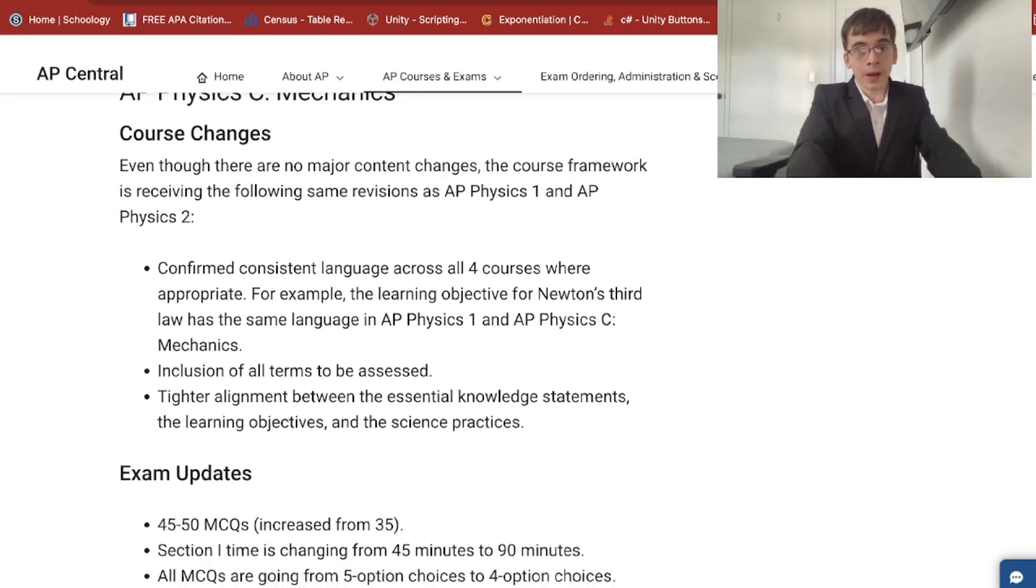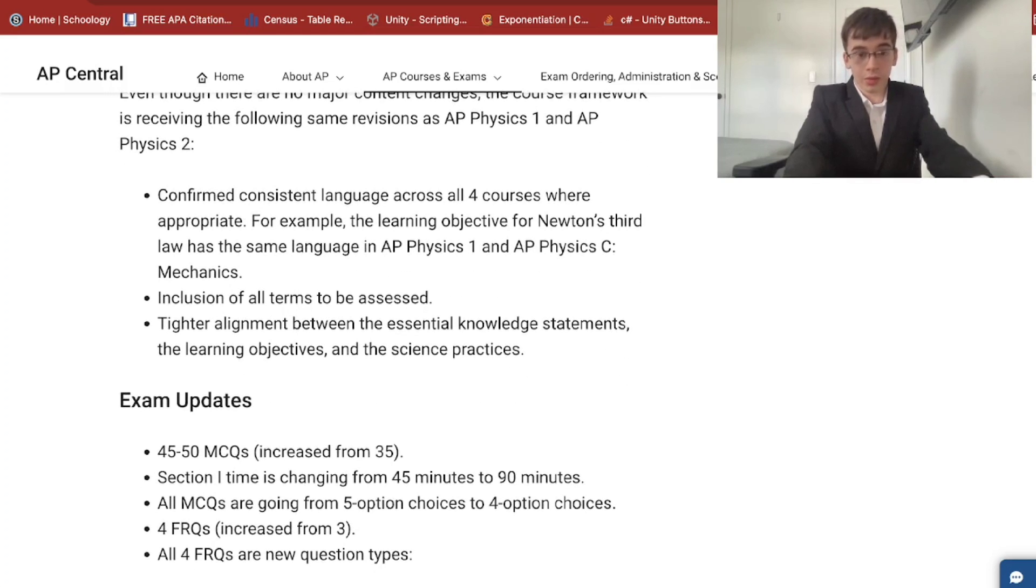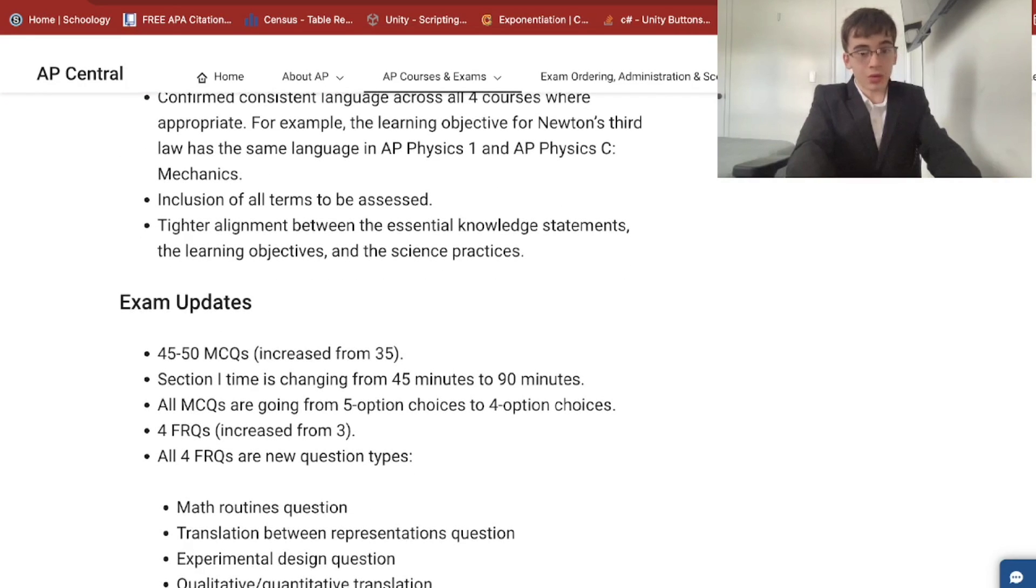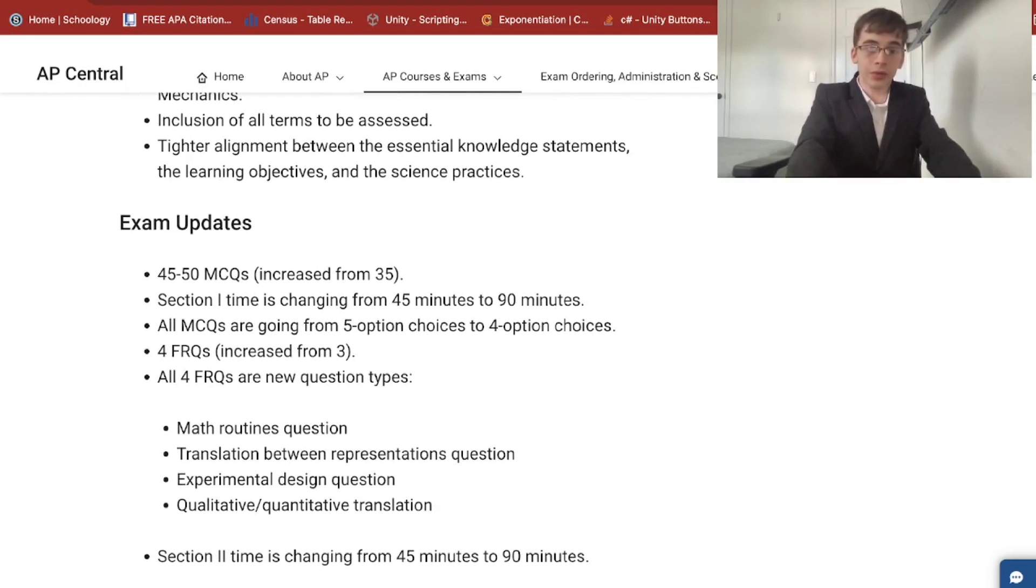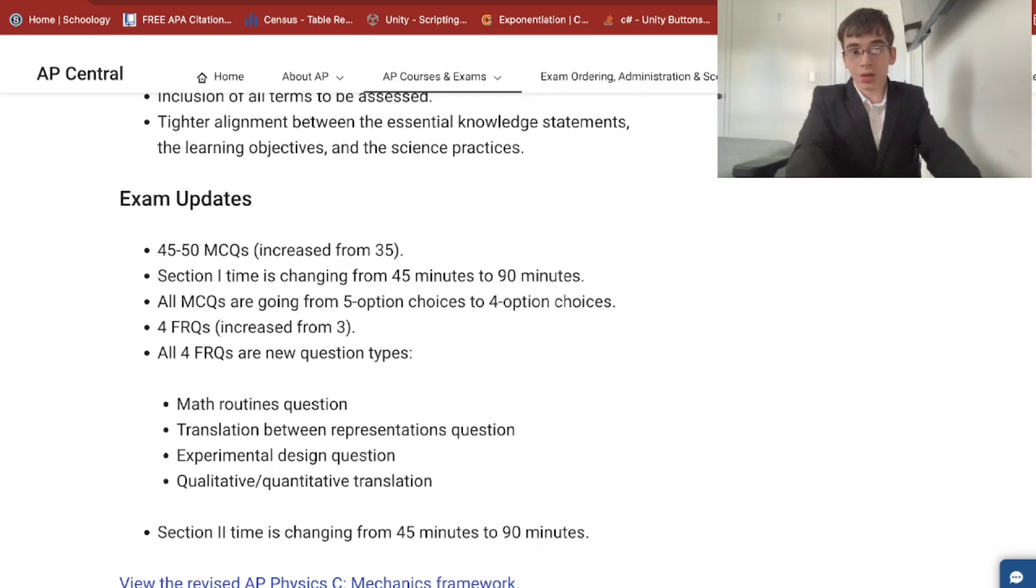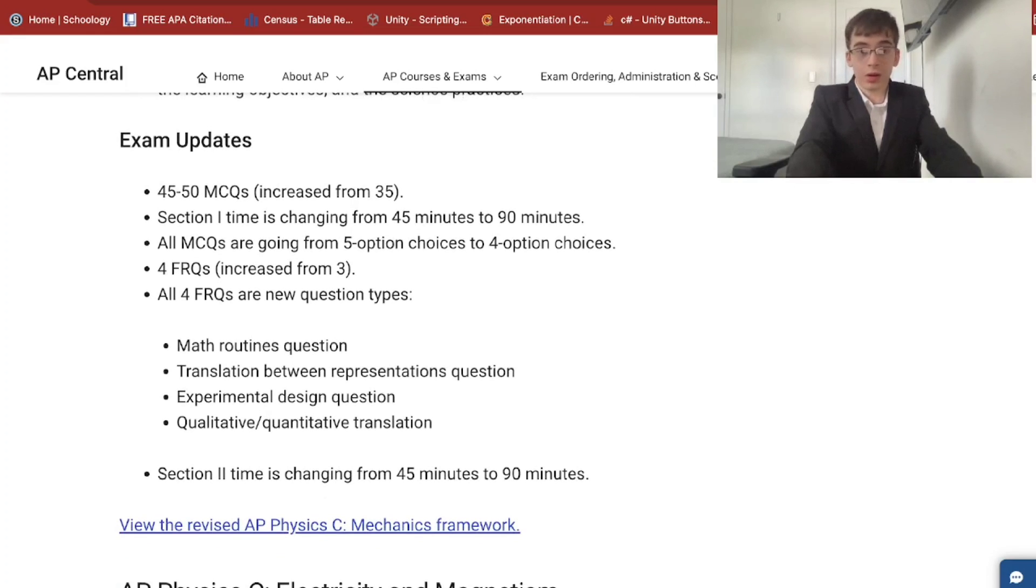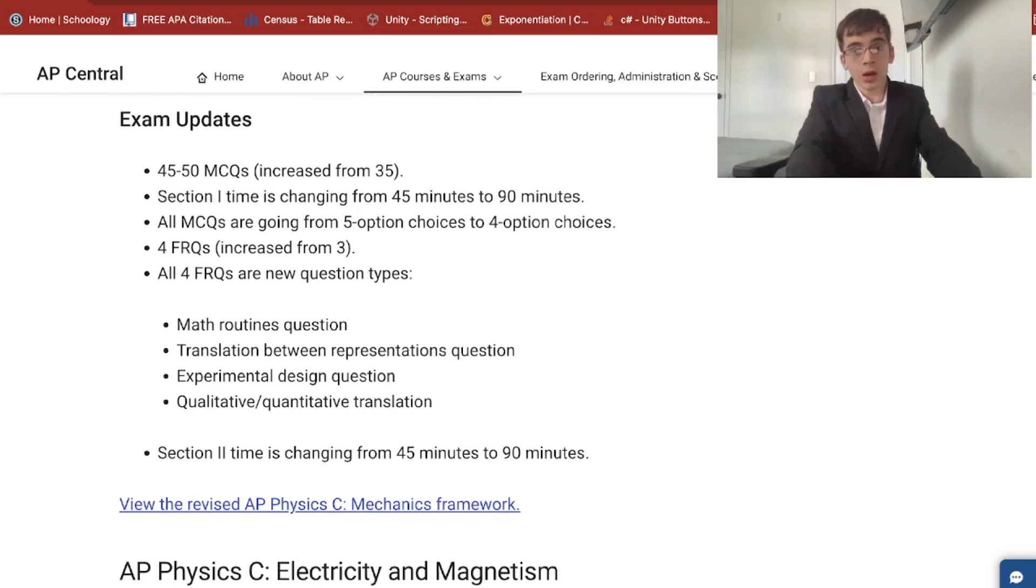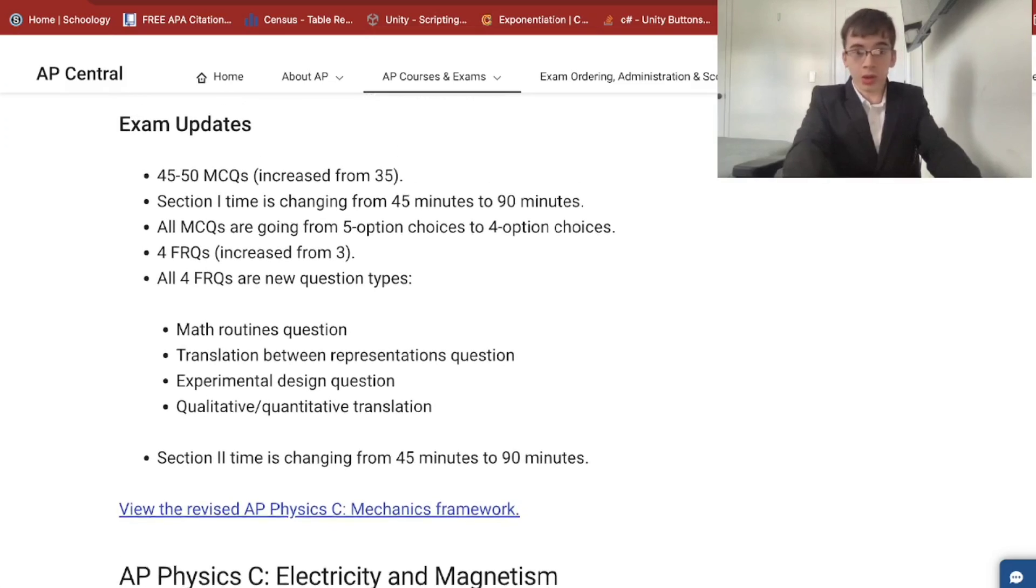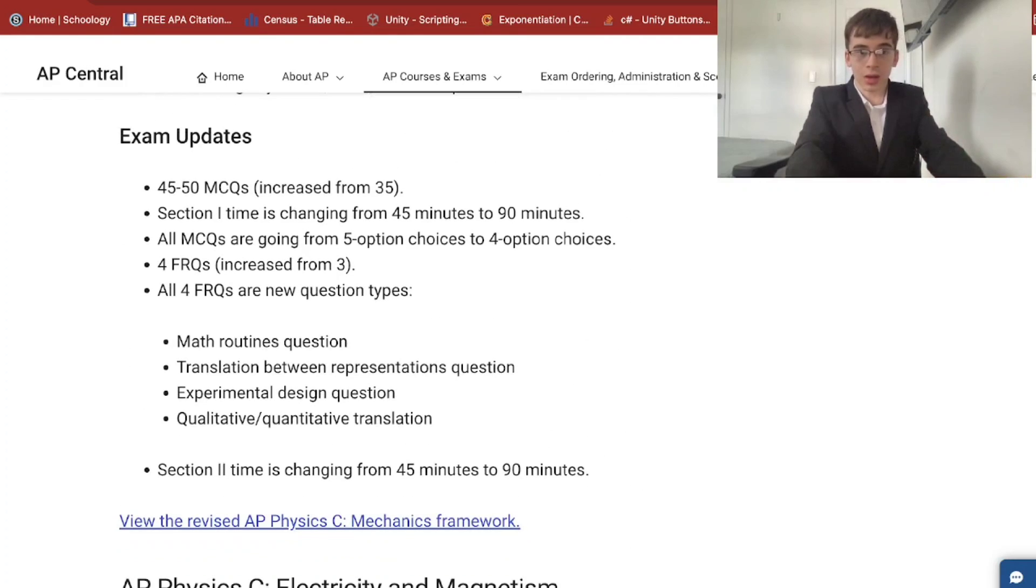AP Physics C-wise, there are not major content changes. They keep modifying the course and exam description communication within the PDF document. MCQs are increased from 35 to 45 to 50. Section one time is changing almost by double from 45 to 90 minutes. MCQs are going from five option to four option, much easier. You have a 5% greater chance of getting a question correct. Four FRQs increased from three, so there are a little bit more FRQs.